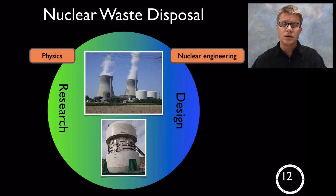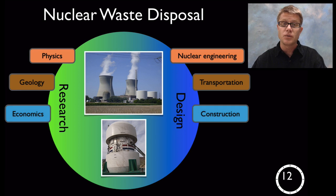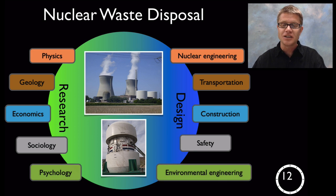To understand what to do with that waste we need a physicist. But we also need a nuclear engineer. We need a geologist and we also need a transportation engineer. We need an economist, construction engineer, sociologist, safety engineer, psychologist, environmental engineer. In other words it spans both of these sides to come up with a solution. And as our problems become more and more complex our solutions are going to have to become more complex as well.